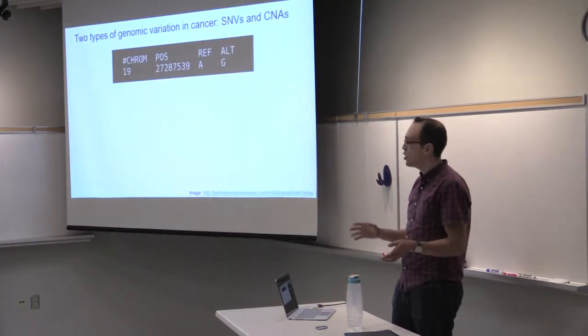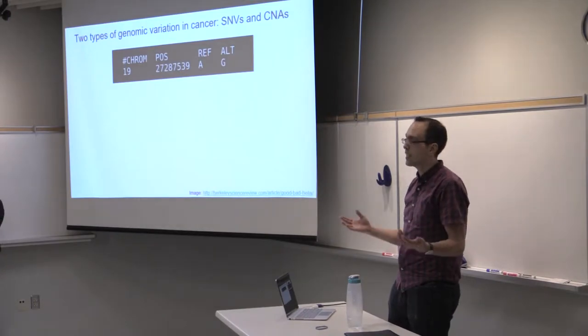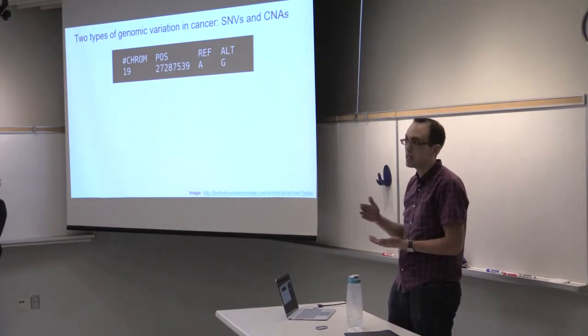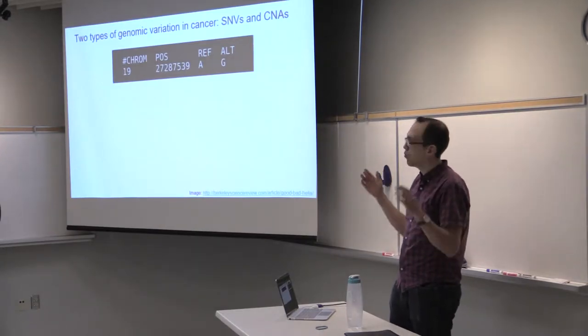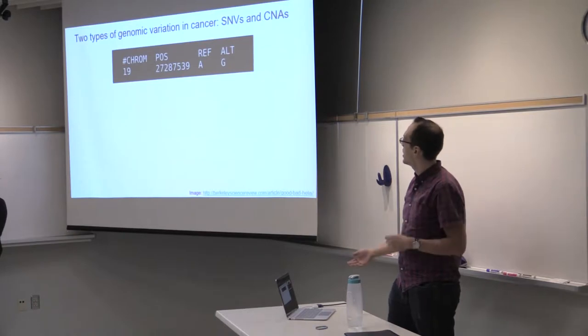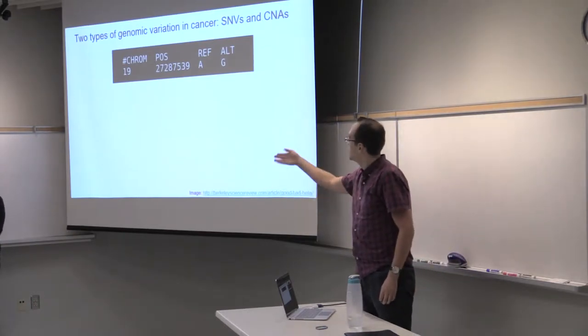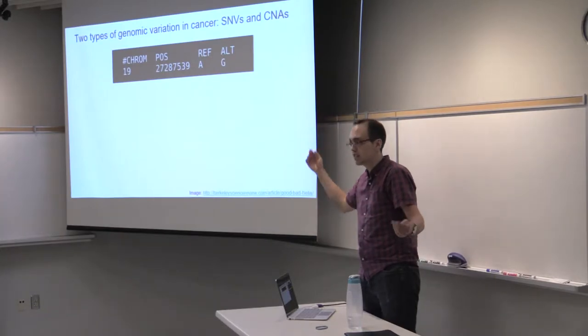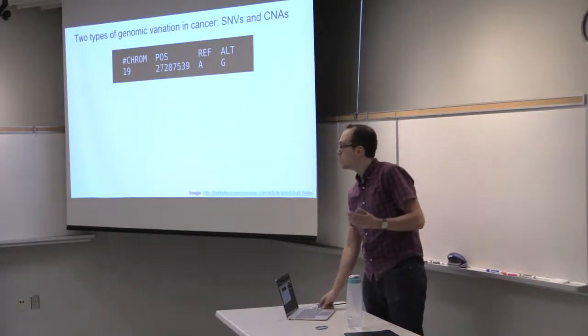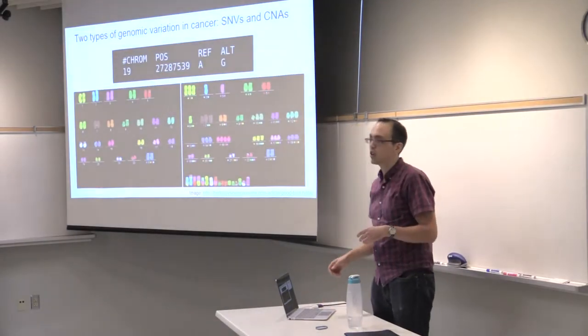We're primarily focused on two types of mutations that happen in cancer. These are single nucleotide variants, SNVs, and copy number aberrations, CNAs. A single nucleotide variant is just where at one locus of the genome, say on chromosome 19 at this position, we flip from the reference A to an alternate B. That's simple enough, but copy number aberrations are more complex.